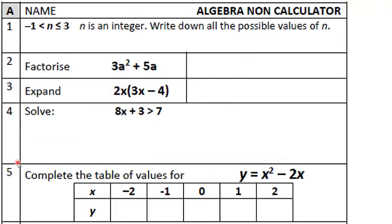The first question is -1 < n ≤ 3, n is an integer. That means it's a whole number. Write down all the possible values of n. One of the ways I suggest doing this is that we write down all the numbers from -1 to 3, then we cross out the ones that we don't need. 3 is included because there's that extra line there. -1 is not included. So my answers are going to be 0, 1, 2, 3. That's it. Make sure you know how to do that. That's a pretty easy question.